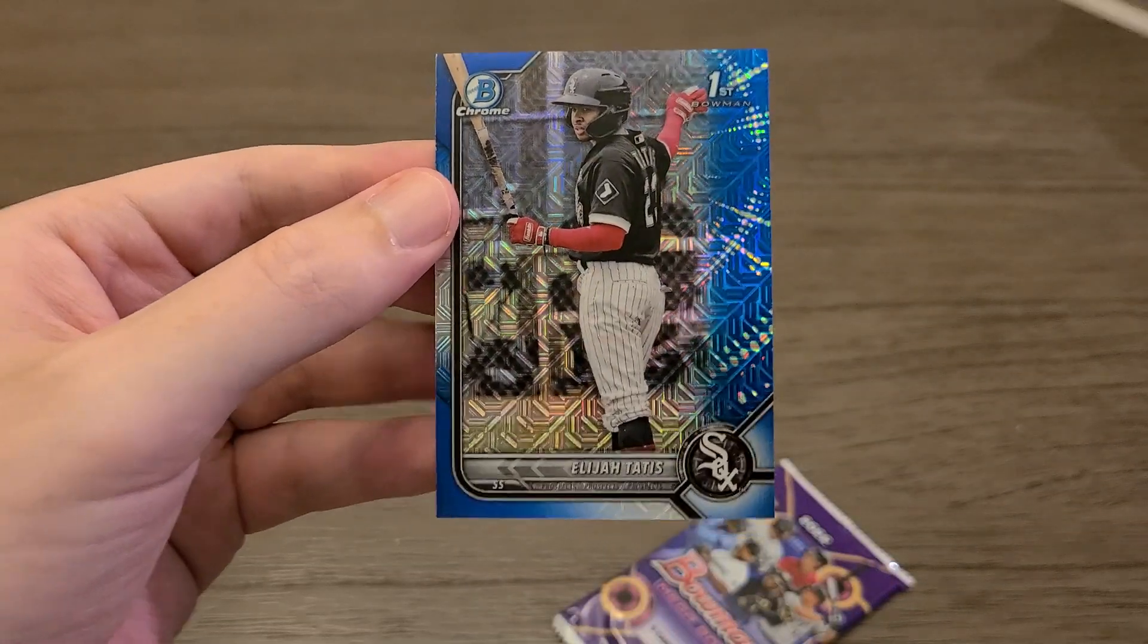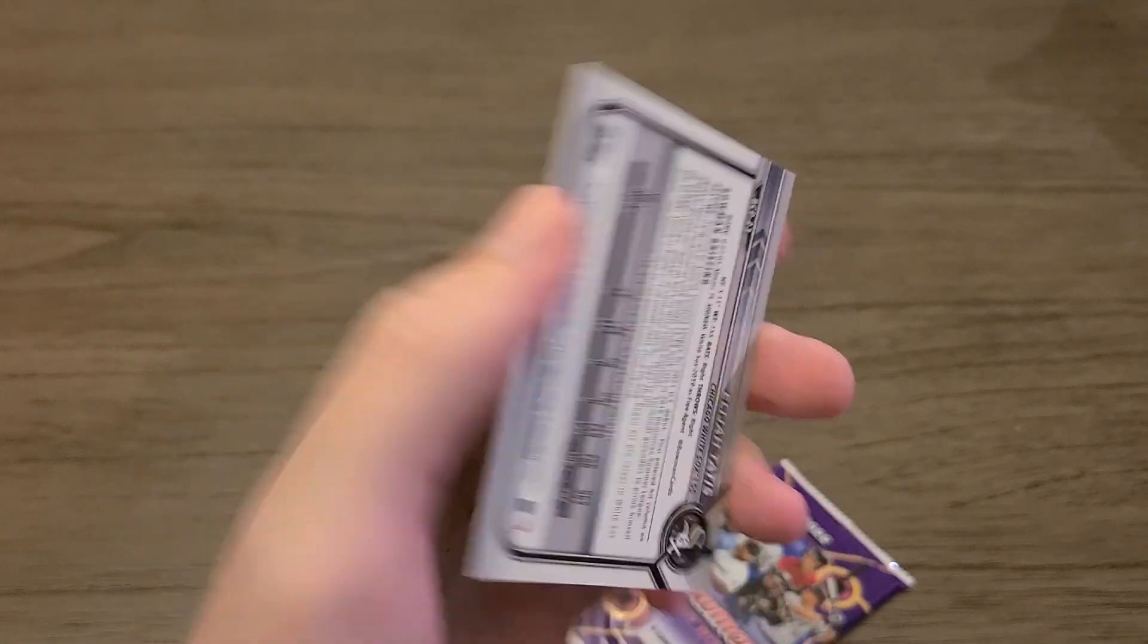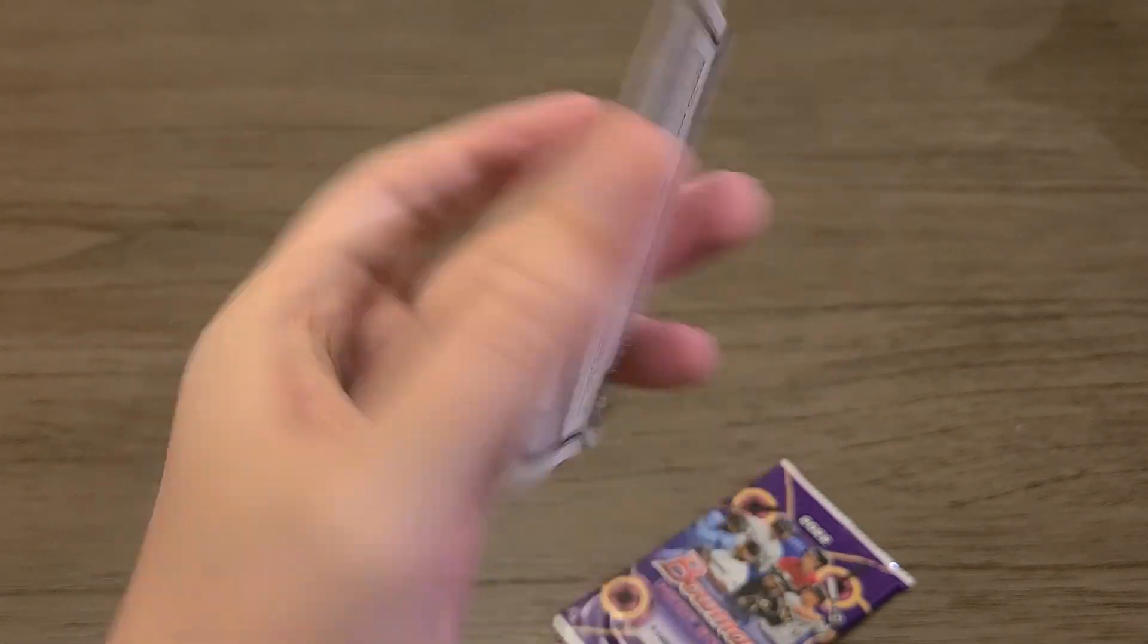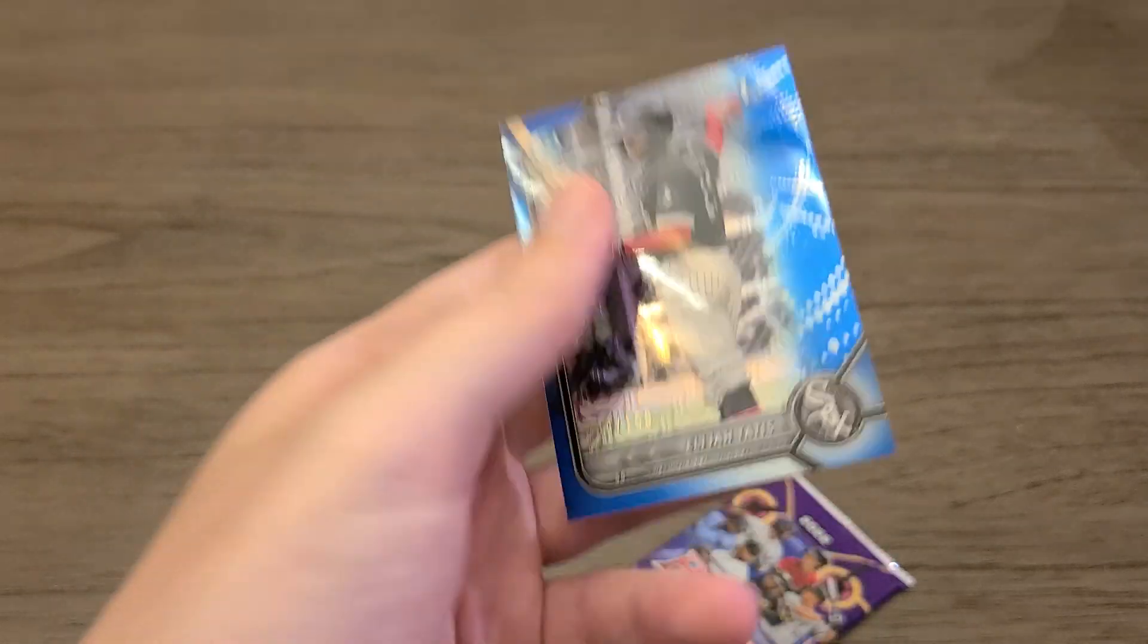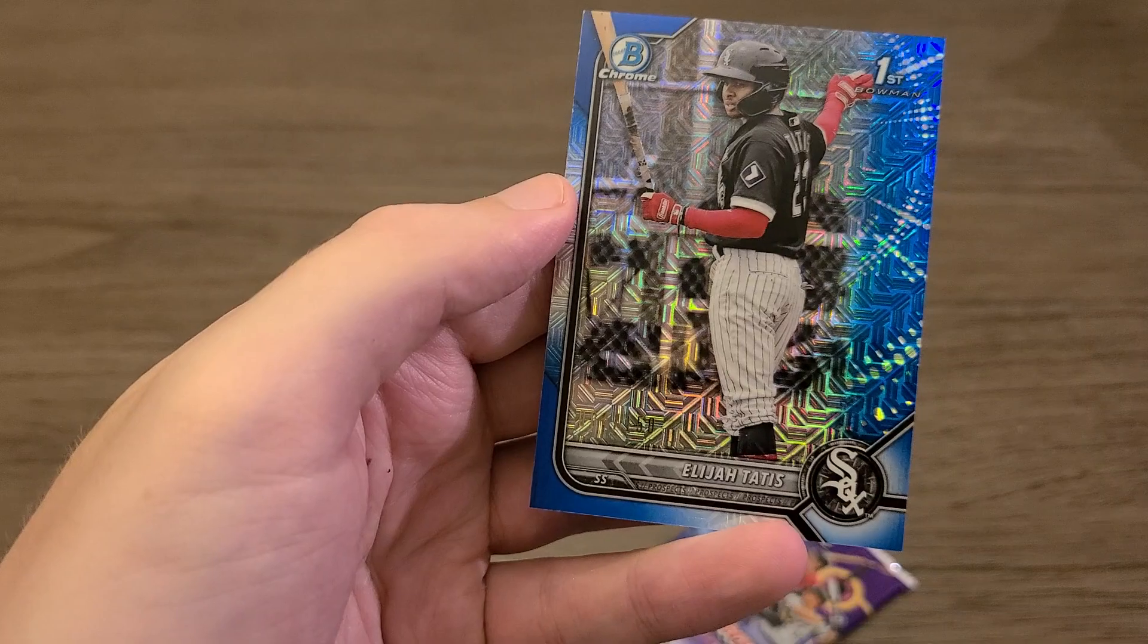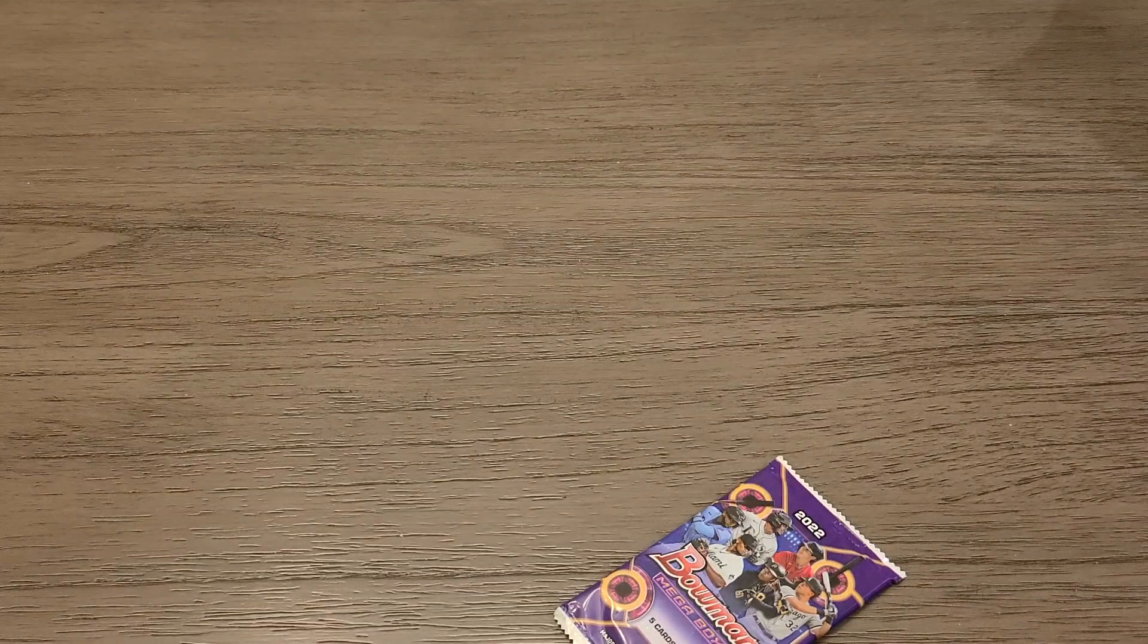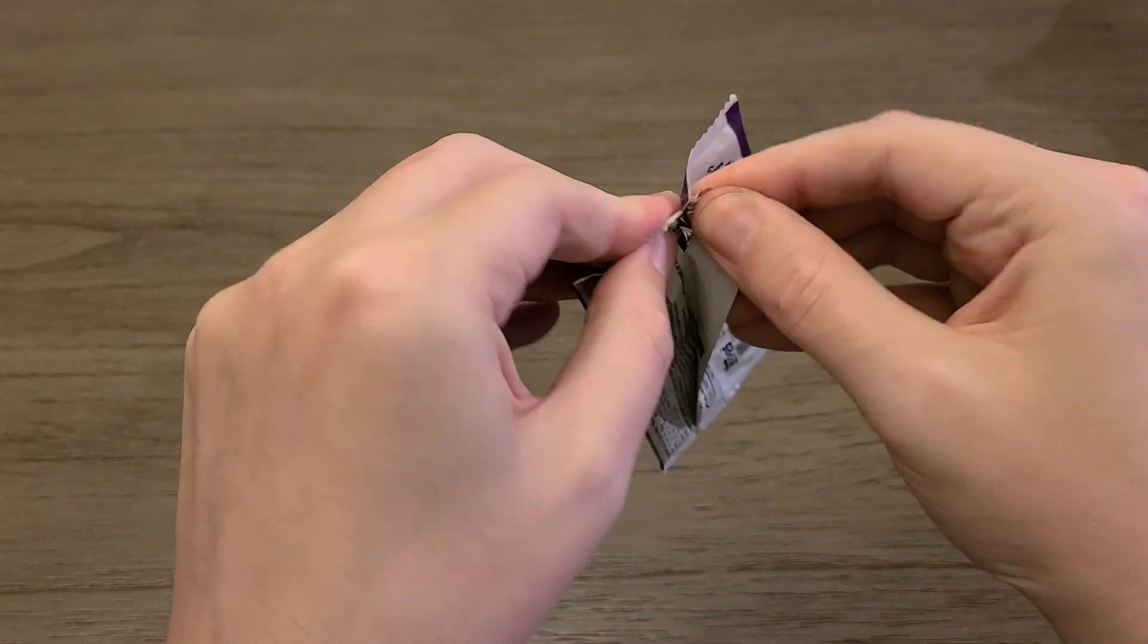Oh, Elijah Tatis. Oh. You know what? Back when this Mega Box came out, this might have actually been a really good card. Is it numbered? Yep. Numbered on the front to 150. Number four of 150. I believe this is Fernando Tatis' younger brother maybe? Again, when this product came out, that would have been a monster card or at least a really good card if I'm not mistaken.